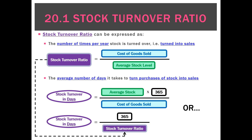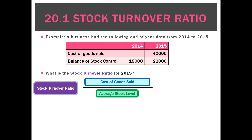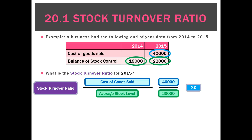Let's use an example. A business had the following end-of-year data from 2014 to 2015: cost of goods sold during 2015 was 40,000; stock at the end of 2014 was 18,000; and stock at the end of 2015 was 22,000. To calculate the stock turnover ratio for 2015 as the number of times per period, we take cost of goods sold of 40,000 and divide by the average stock — the beginning and end stock divided by two — giving us 20,000. That gives a stock turnover ratio of 2.0.